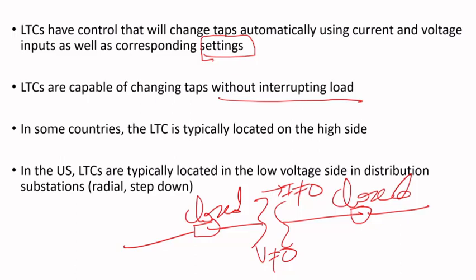There will be no damage, as the tap changer is designed for that purpose. In some countries, the LTC is located on the high side, but in the United States, LTCs are typically located on the low voltage side — for instance in distribution, for radial or step-down applications where you step down from high voltage to low voltage. There are cases where it might be on the high side as well.